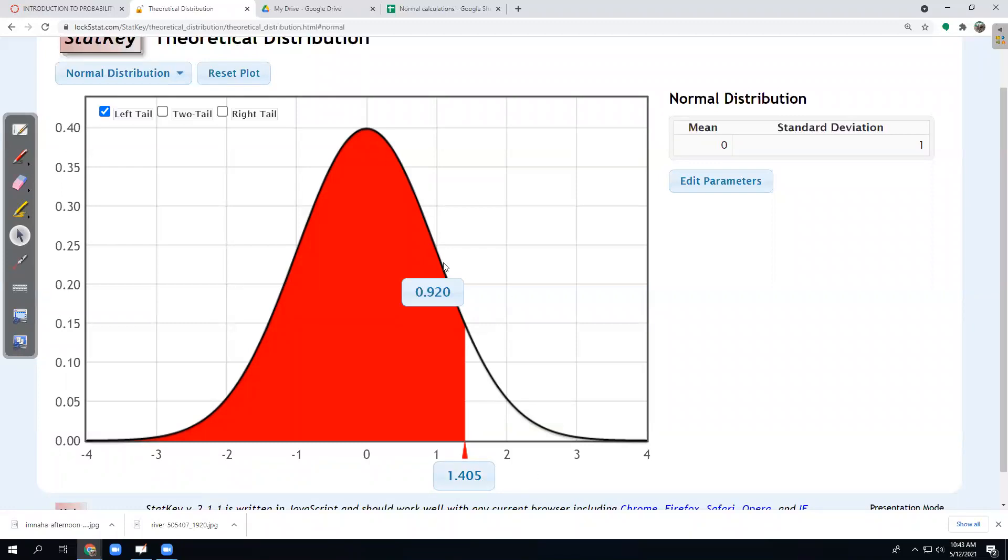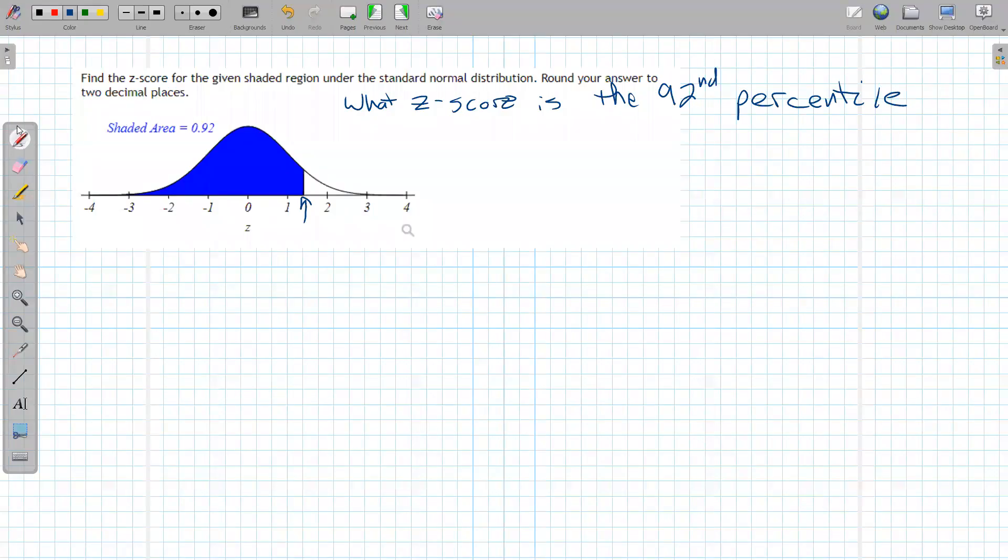And does that seem reasonable? I think so. So remember, within two standard deviations is 95% plus the tail would be 97.5% at 2. So a z-score of 2 would be like the 97th, 98th percentile. A z-score of 1.405 is the 92nd percentile. So we want z is about 1.405.